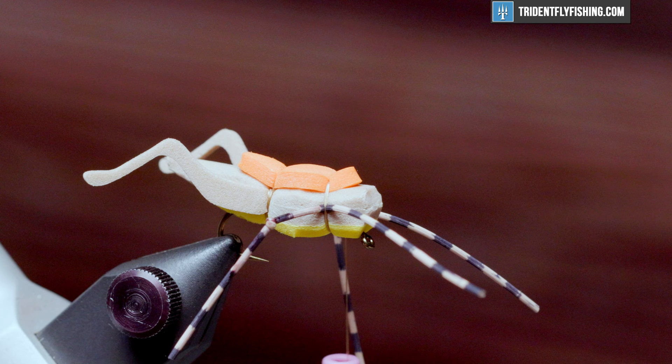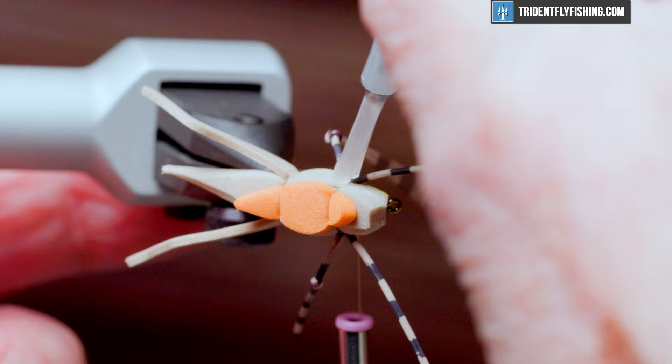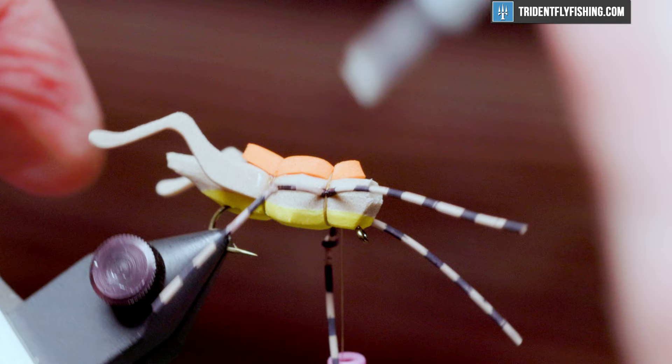And we're going to take some more zap-a-gap and place it at the tie-in point of those legs so that they don't move around when we do our whip finish. Just a daub there. Same thing on the rear legs. Just reinforces them.